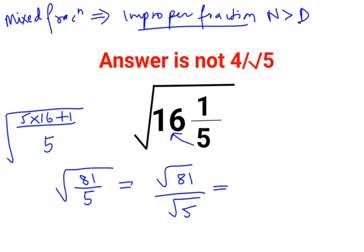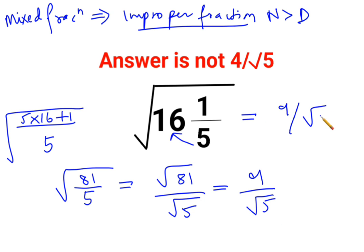So the answer for this question is root of 81 upon 5, which can be written as 9 upon root 5. That's it for today — I will see you in the next video.